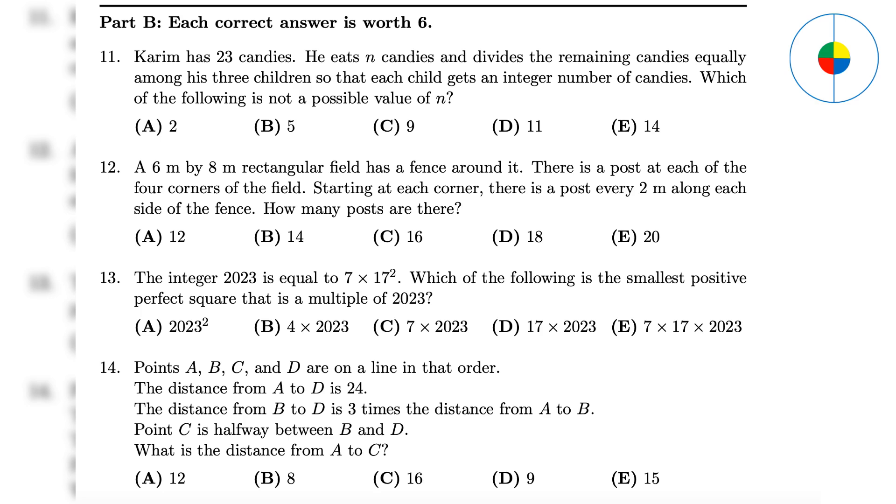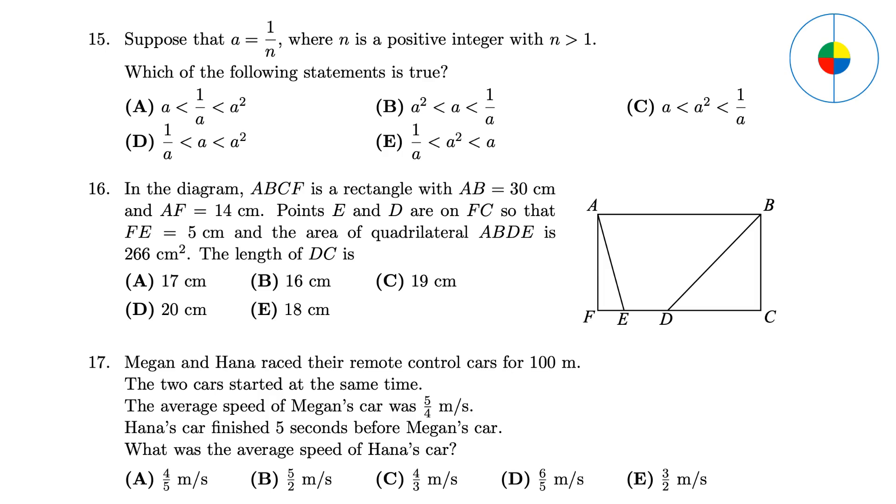Question 13: If you know the concept of a perfect square, you know the answer is C. Question 14: AD is 24, so BD is 18 and AB is 6. Then, BC and CD are both 9. So, AC is 6 plus 9 equals 15. Question 15: A is a decimal number. The square of A should be lower than A, so the answer is B.